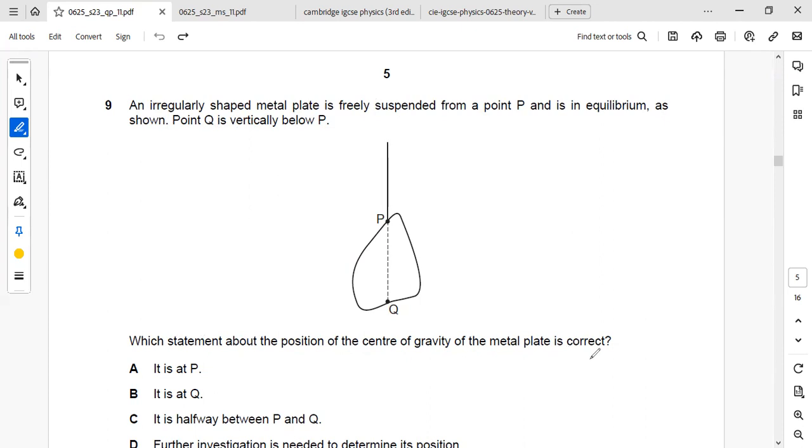The center of mass of a regularly shaped body that has the same density throughout is at center if it is regularly shaped. The center of gravity will be at center. But we can see here this metal plate, it is irregularly shaped. It is already specified it is irregularly shaped, so it is not at the center, not at P, not at Q. We need to find it by further investigation.